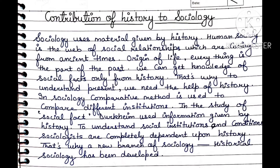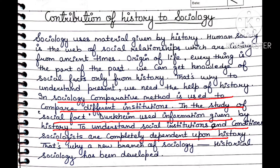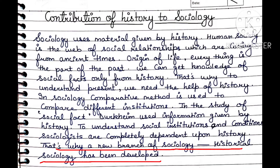In sociology, the comparative method is used, which means different groups and institutions are compared — how people have developed, how things started and were influenced in society. For this comparison, we need to take the help of history to understand how institutions and groups originated. Sociologists studying social facts first learn from history, then compare different institutions and groups. To understand social institutions and conditions, sociologists are completely dependent upon history, which is why a new branch — historical sociology — has been developed.